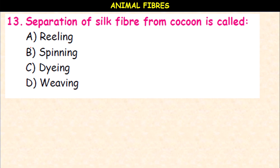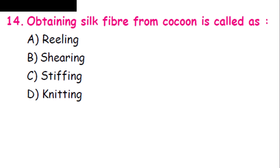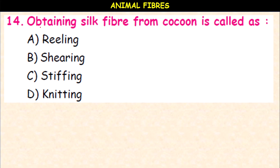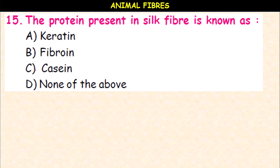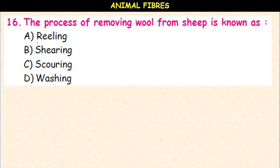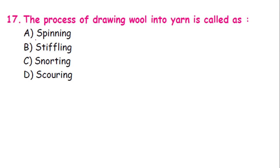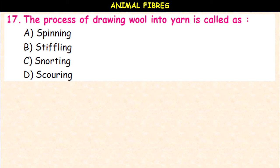Separation of silk fiber from cocoon is called reeling, spinning, dyeing, or weaving? It is reeling. Obtaining silk fiber from cocoon is called reeling, shearing, stifling, or knitting? It is stifling. The protein present in the silk fiber is known as keratin, fibroin, or casein? It is fibroin. The process of removing wool from the sheep is known as reeling, shearing, scouring, or washing? It is shearing. The process of drawing wool into yarn is called spinning, stifling, snoring, or scouring? It is spinning.